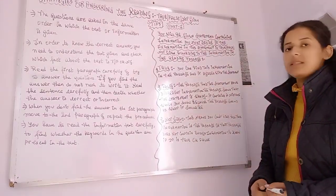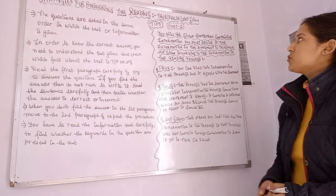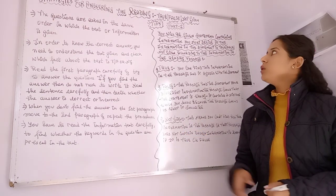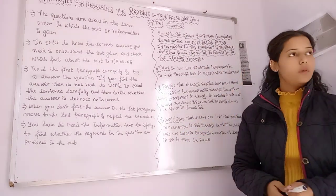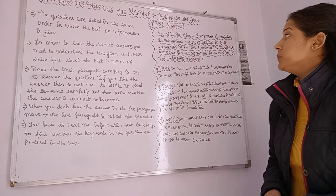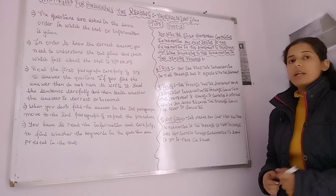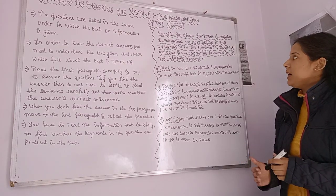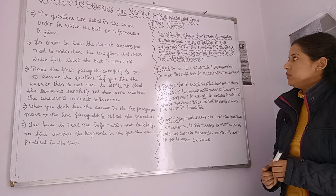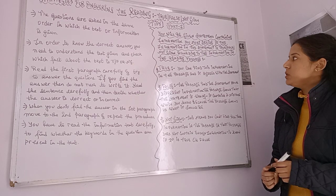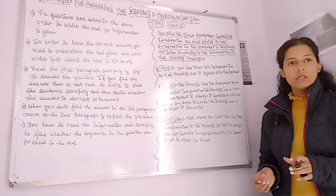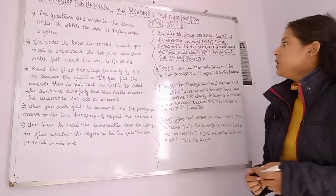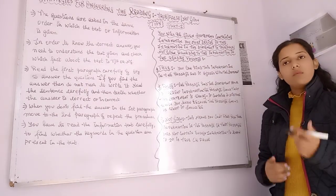Today we are going to do the reading section and discuss True, False, Not Given. There are five parts to discuss, and today we will cover part one along with tips and tricks. You will be given a statement containing information and must decide if that information is true, false, or not given according to the reading passage. There are different tips and tricks to follow.